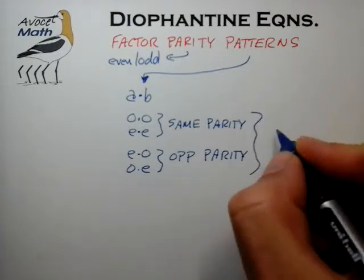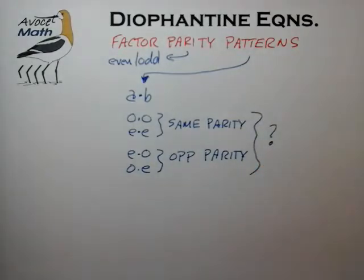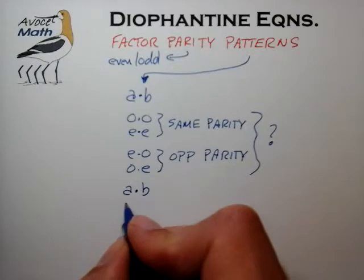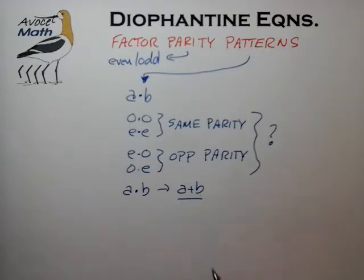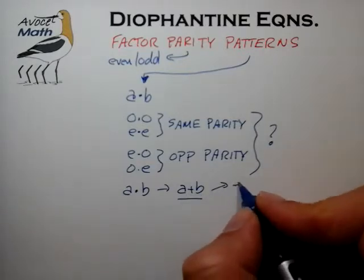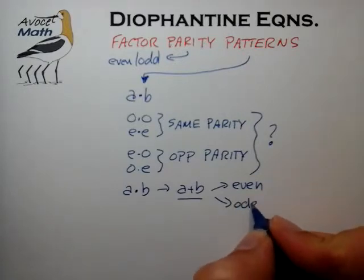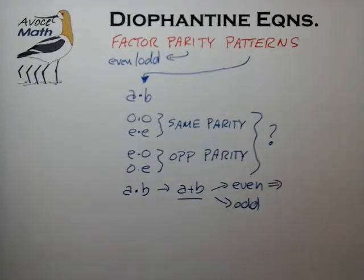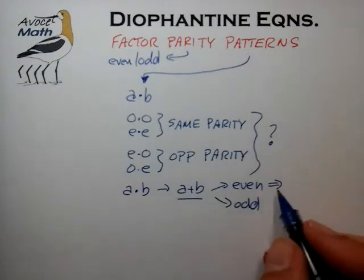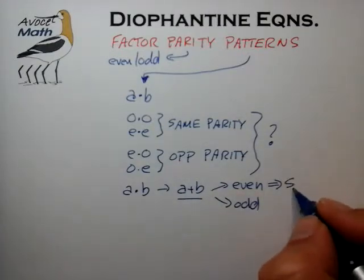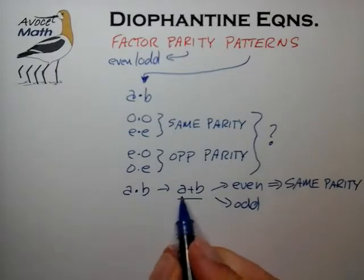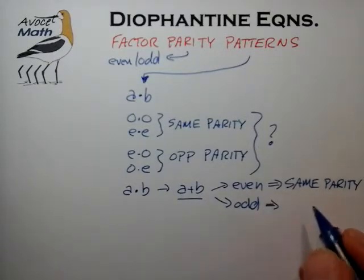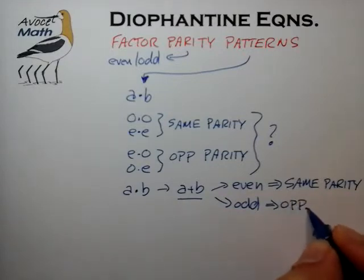The question comes up often: which of these two patterns is appropriate for the problem you're attempting to solve? It turns out there's a very simple test for this. It has to do with taking the elements of the two factors you're considering and simply adding them to form A plus B, then deciding whether A plus B is even or odd. If it's even, that's a conclusive if-and-only-if indication that the two factors are of the same parity. And if the sum of A and B is odd, then that's a definitive indication that the two numbers are of opposite parity.